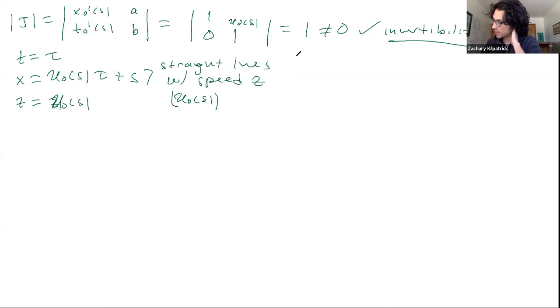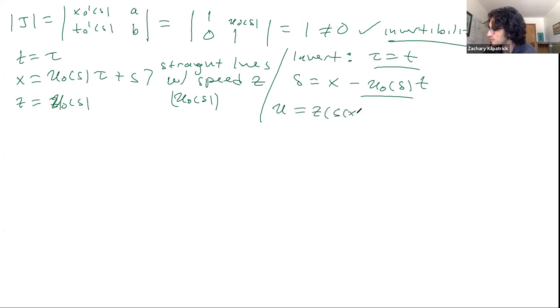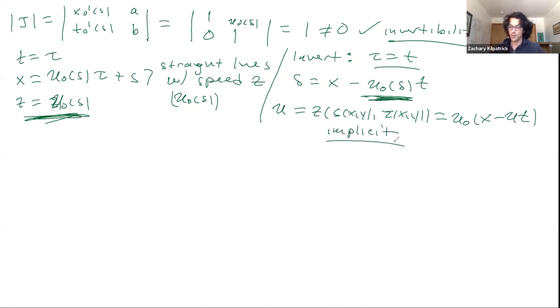So to invert everything, the invert step now is not too hard. I get τ equals t, I'm done there. I get that s equals x minus u_0(s)t. So I get this implicit expression, which I remember from before, for how I should write down s. So when I go to write down what u is, u is going to be z(s(x,y), τ(x,y)). I can handle the t part, but now x equals x minus, well, this I know is just u. So again, I get back this implicit solution. And there's not really any way around this unless I know my particular initial condition.